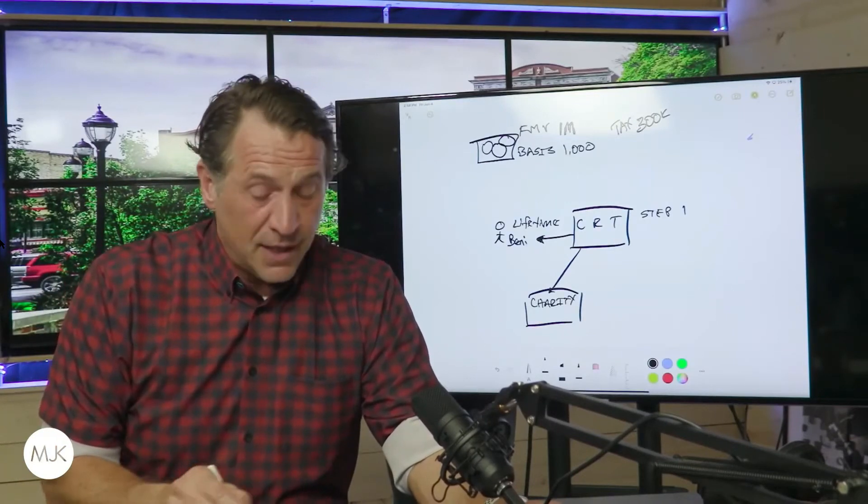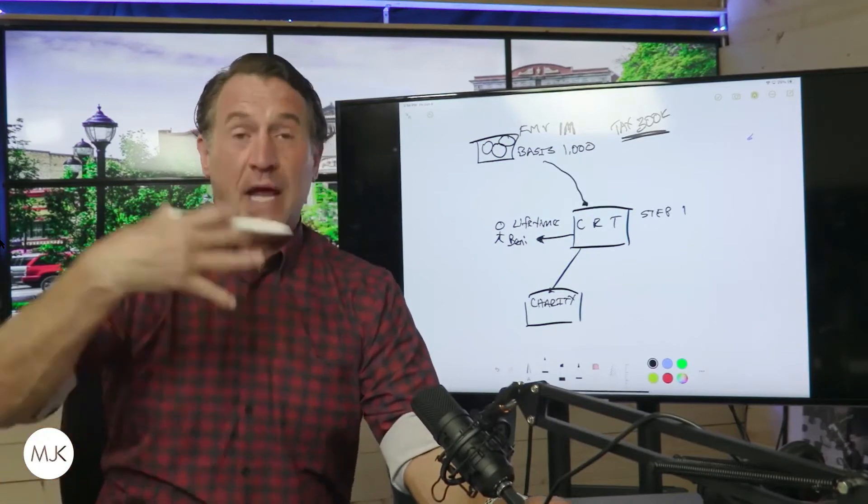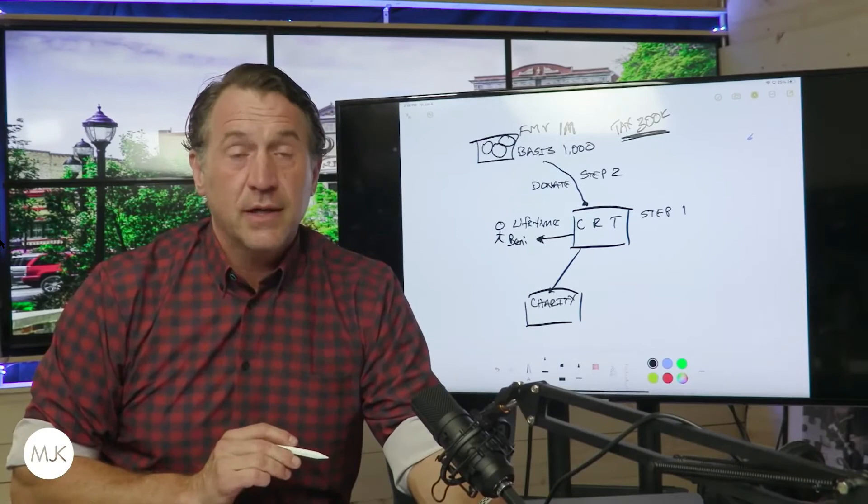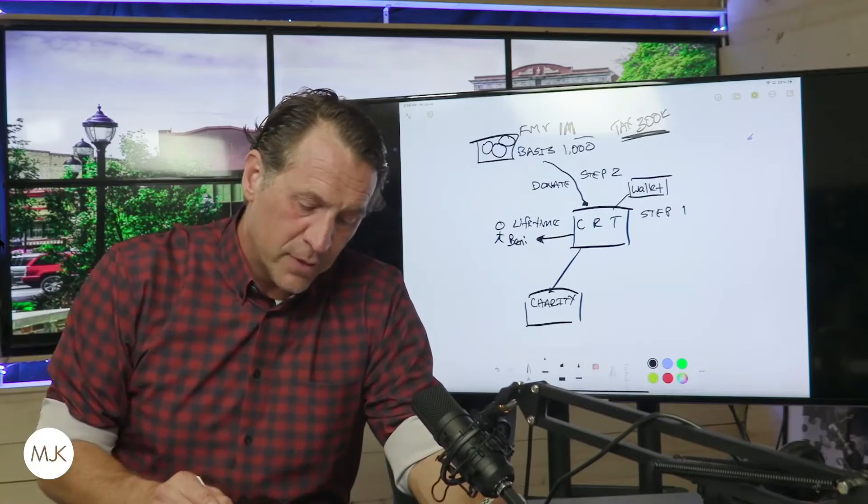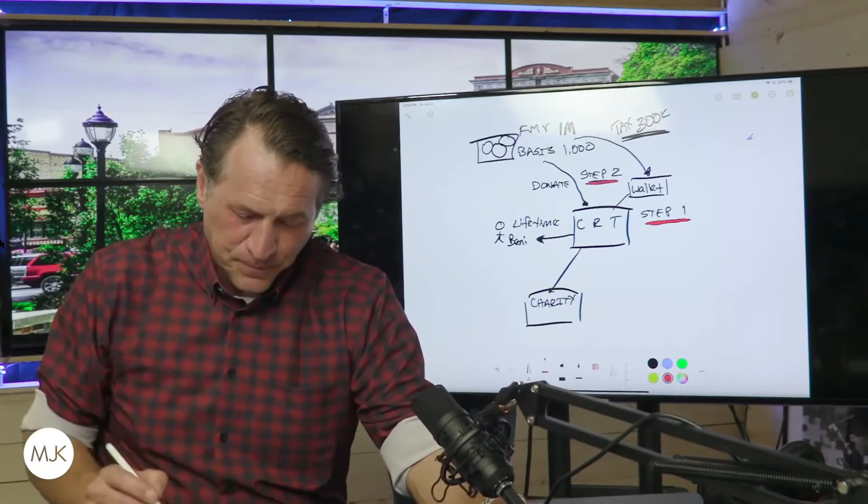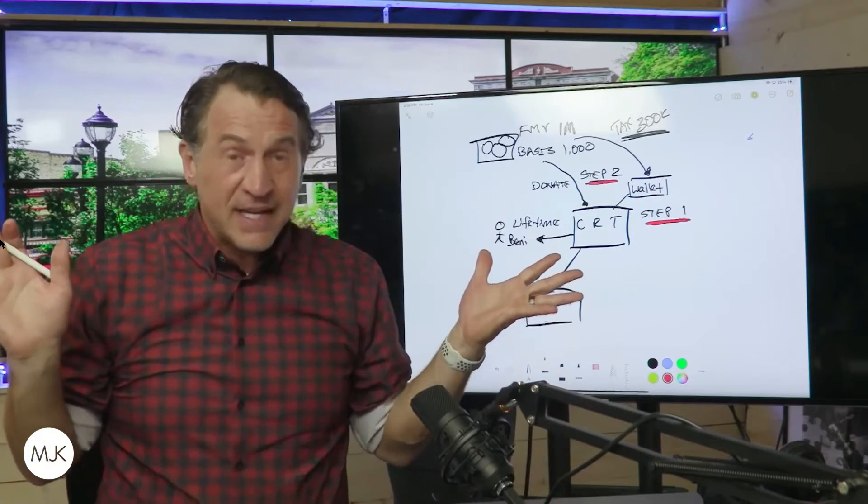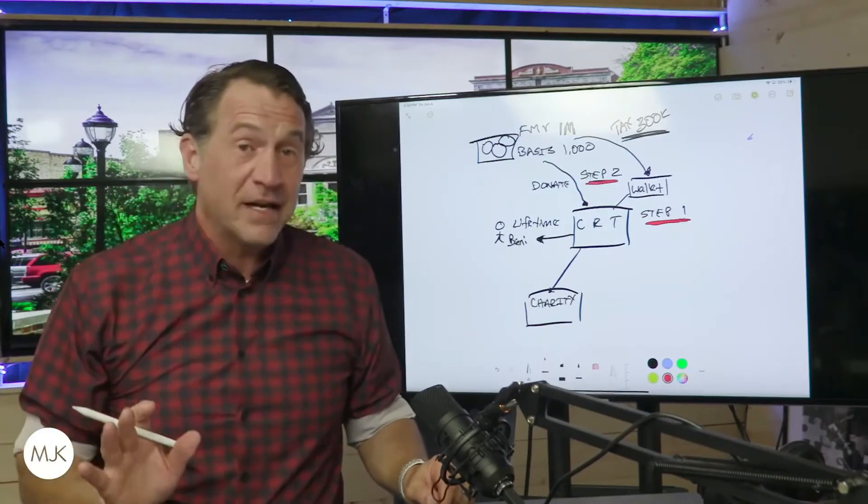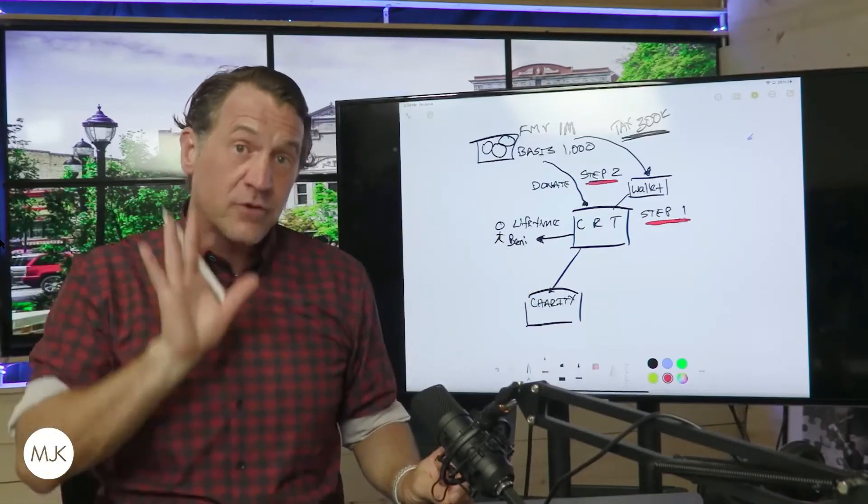So, instead of selling this and paying tax of over 300 grand plus, after you create the trust, step two is you're going to donate, contribute your cryptocurrency. And that means your CRT is going to set up a wallet. And you'll probably do a wallet-to-wallet transfer. And you're going to transfer your crypto to your CRT wallet. That's step two. Now, the reason why I call it donate is because the CRT is a charity in and of itself. So, when you donate the cryptocurrency to this charity, wait till you see the end of this, you're going to freaking love it. When you donate this money to the charity, you get a tax deduction.